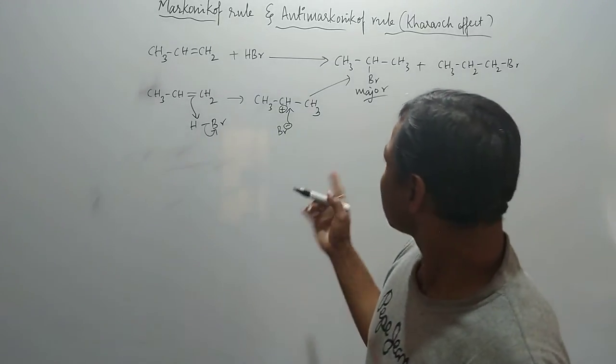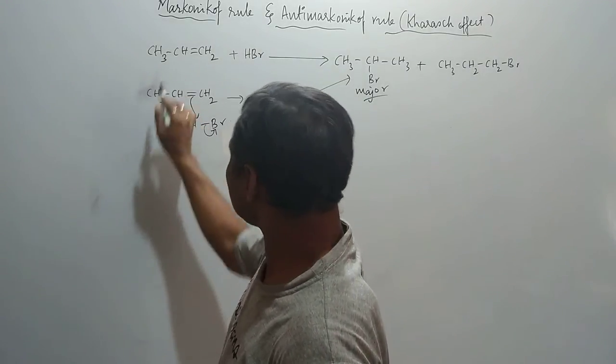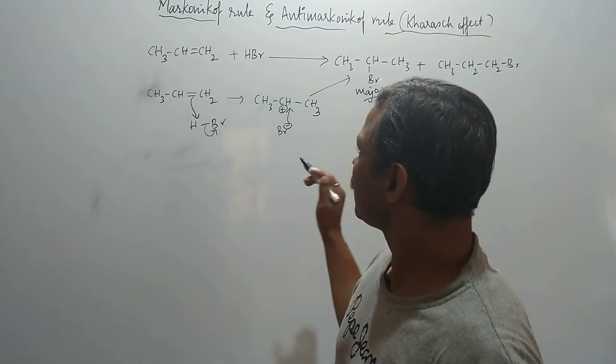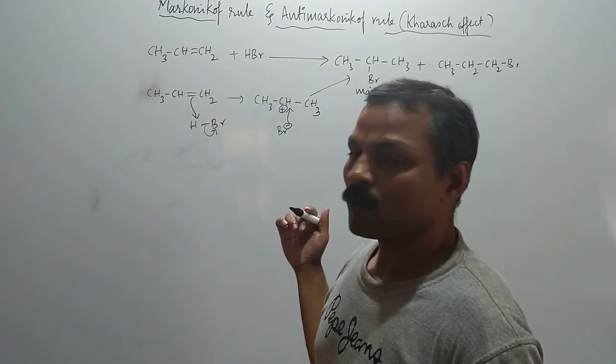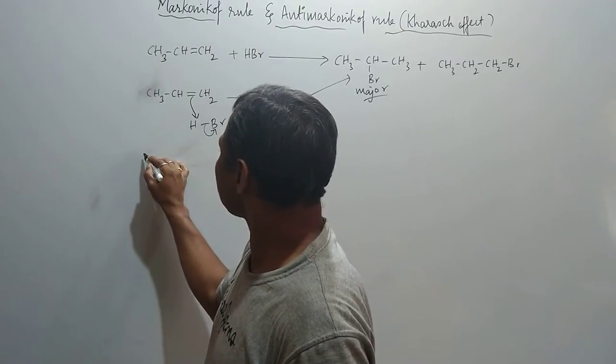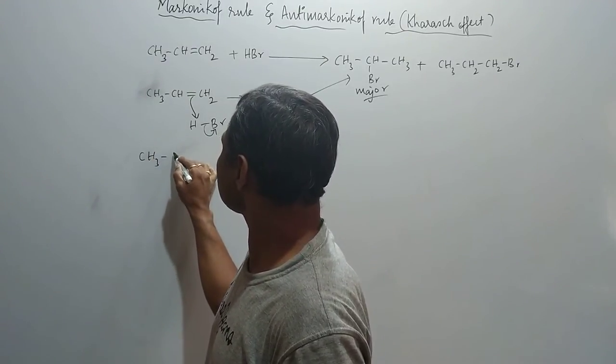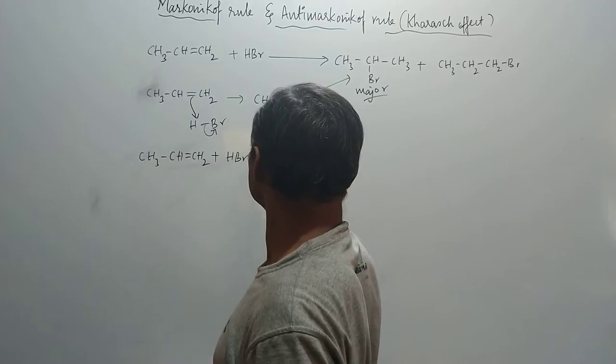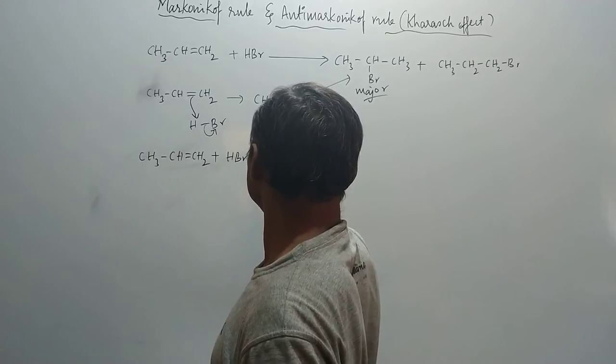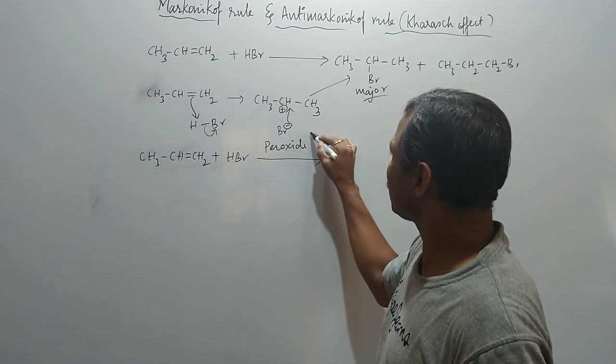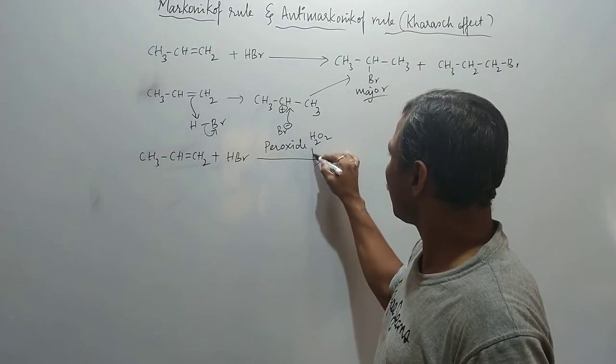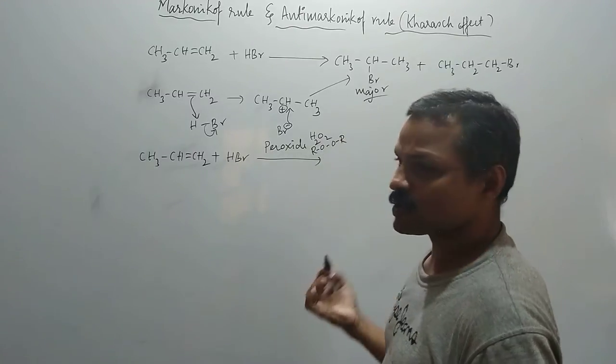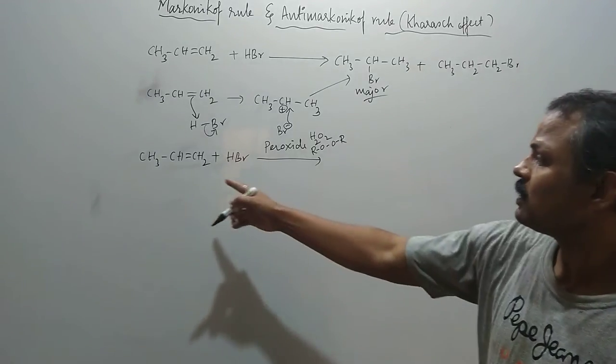Whereas in the case of anti-Markovnikov, the same molecule can show the other product in presence of a compound, that is peroxy compound. So here I take CH3-CH=CH2 plus HBr, here I take peroxide compound. So the peroxides can be anything - hydrogen peroxide or benzoyl peroxide or any peroxide compounds.